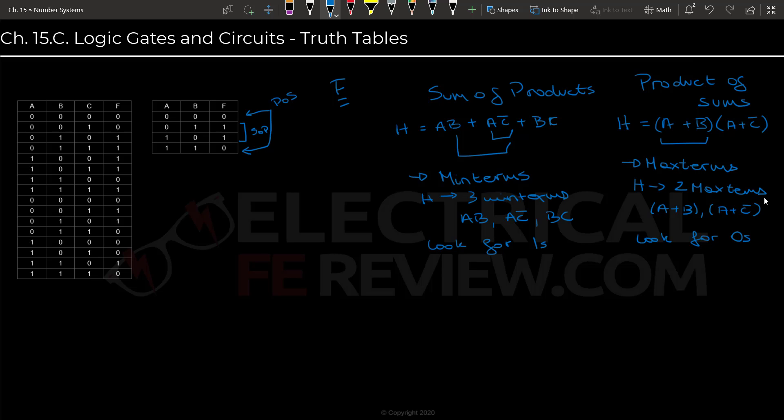So for sum of products, when we are looking for ones or using the sum of products, we will be counting zeros as that variable's complement, and we will be counting ones as the variable. So for example, if we look at the first one in this truth table, we will see that it is composed of a zero for A and a one for B. So our minterm will become A' and B.